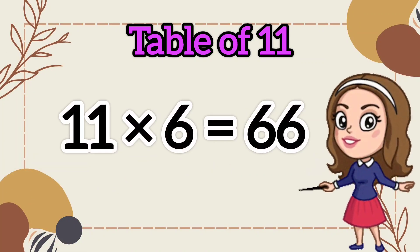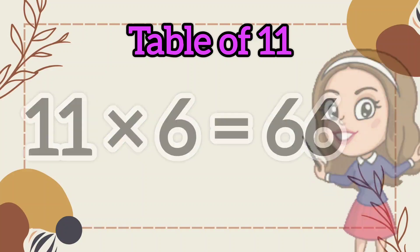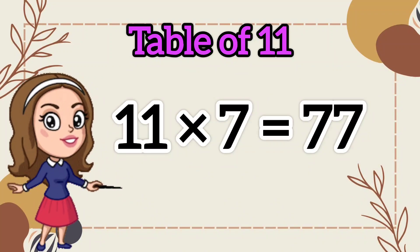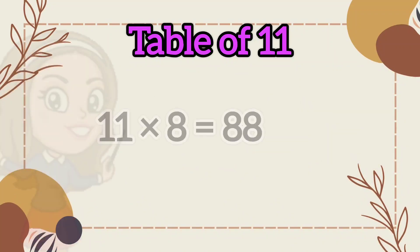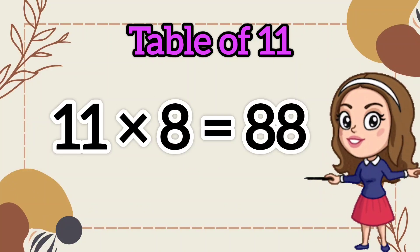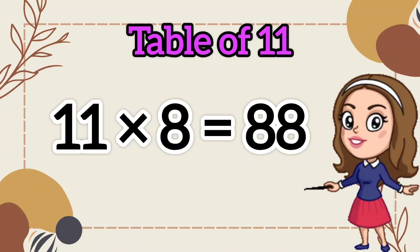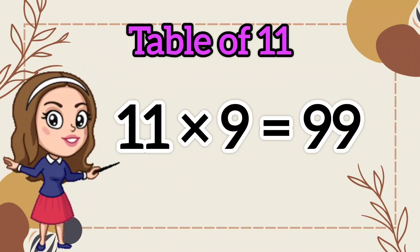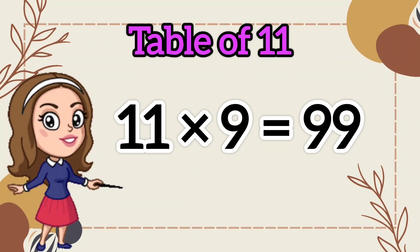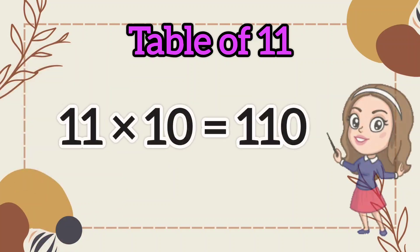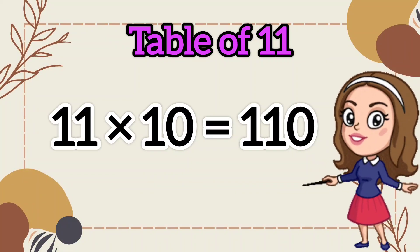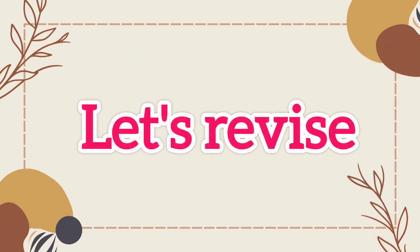11 sixes are 66. 11 sevens are 77. 11 eights are 88. 11 nines are 99. 11 tens are 110.